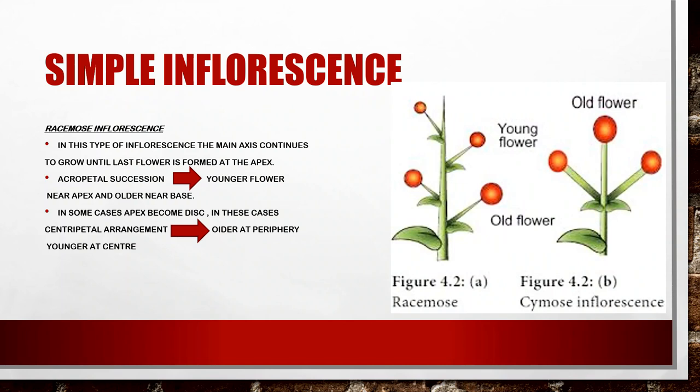In some cases, the apex becomes a disc-like structure. In these cases, the centripetal arrangement places the older flowers on the periphery and the younger flowers at the center. The apex becomes flattened and compressed, forming a disc-like structure. The older flowers arrange at the periphery and the younger flowers arrange in the center. This is known as centripetal arrangement.